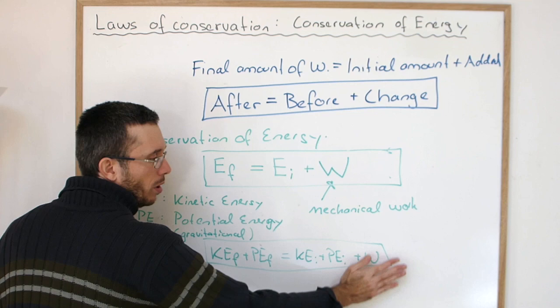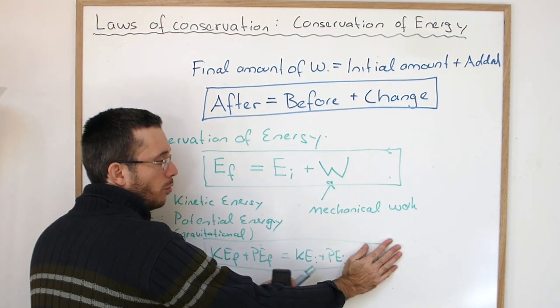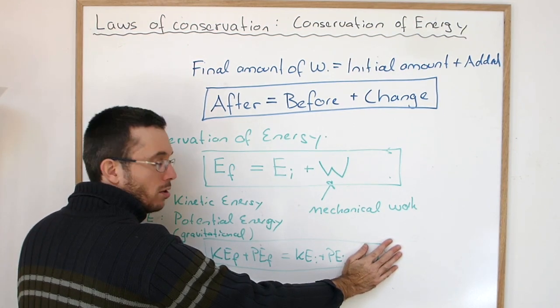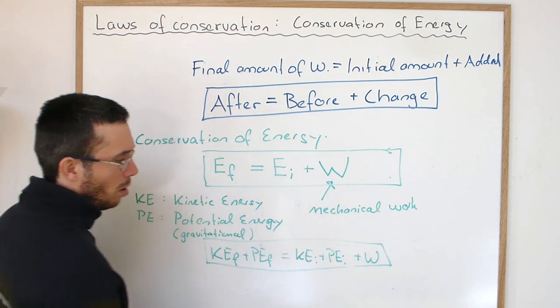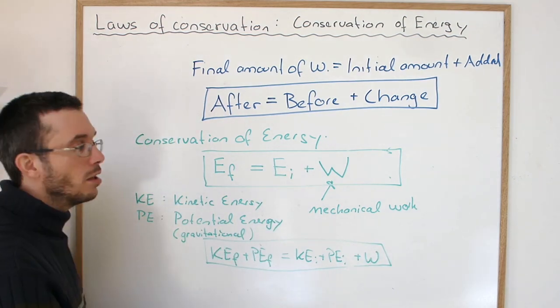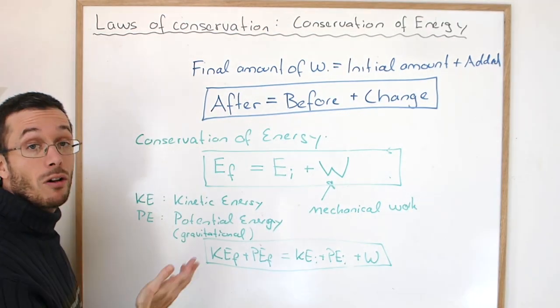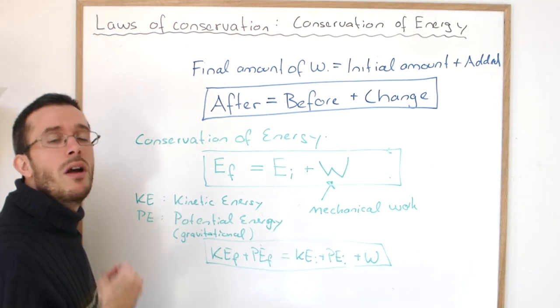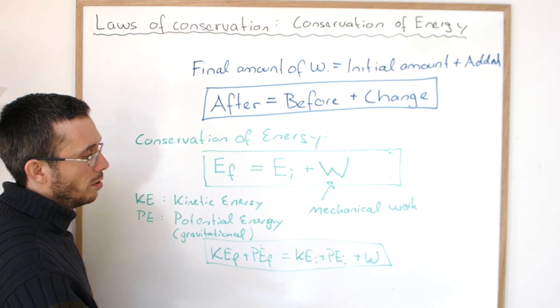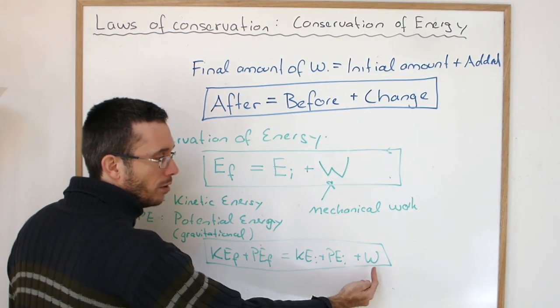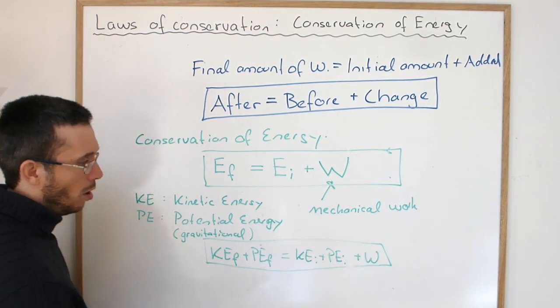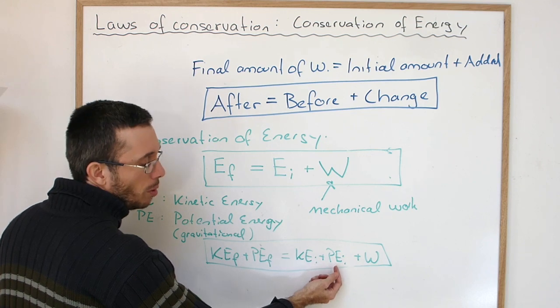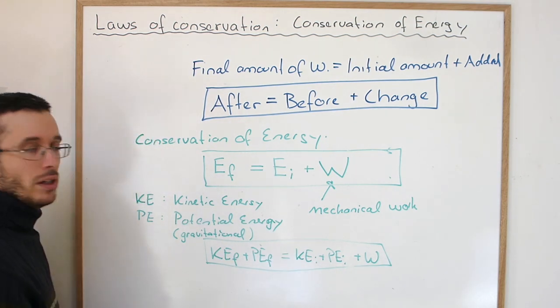So even if we have no work coming in from the outside, we could convert some potential energy into kinetic energy, but the total amount of energy will always remain constant. That's what we mean by energy is conserved. It cannot be made up or destroyed. It can only be transferred from one object to another or transformed from one form of energy into another.